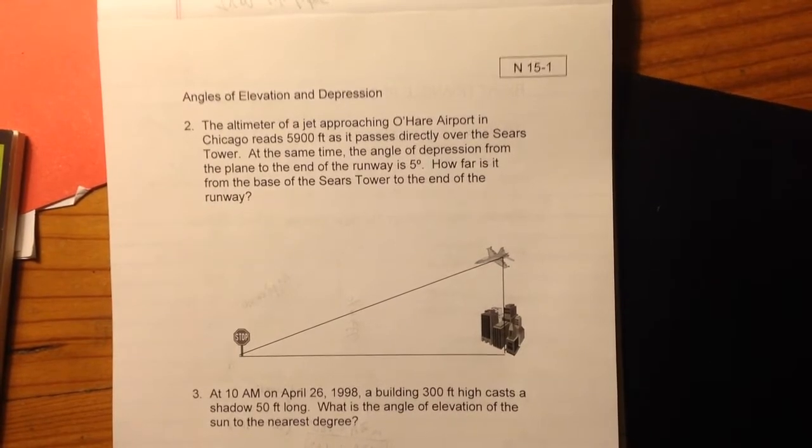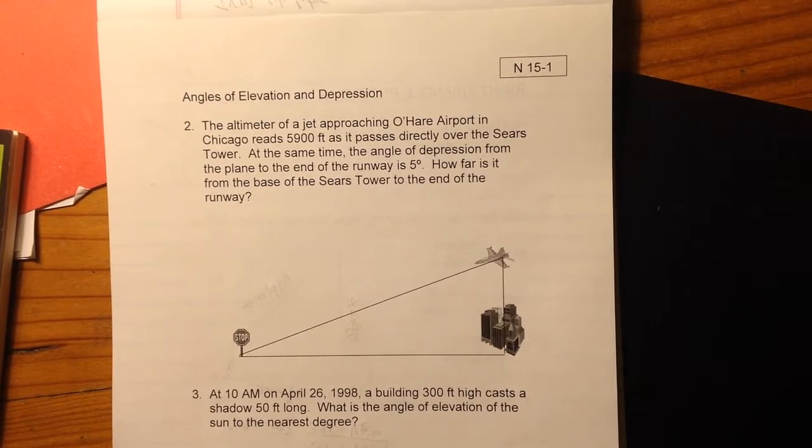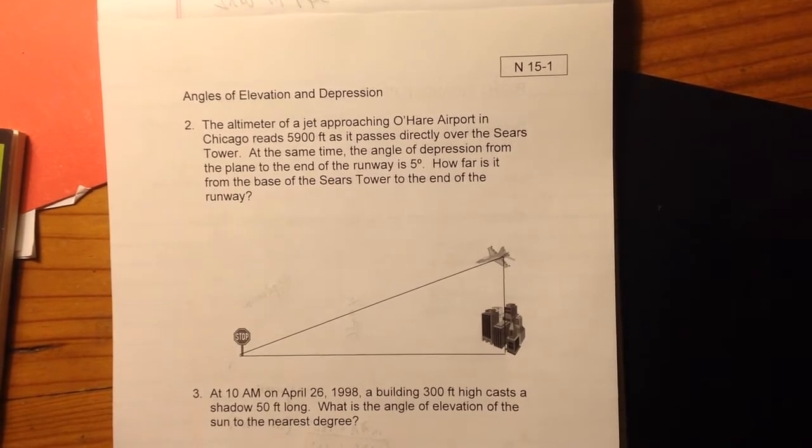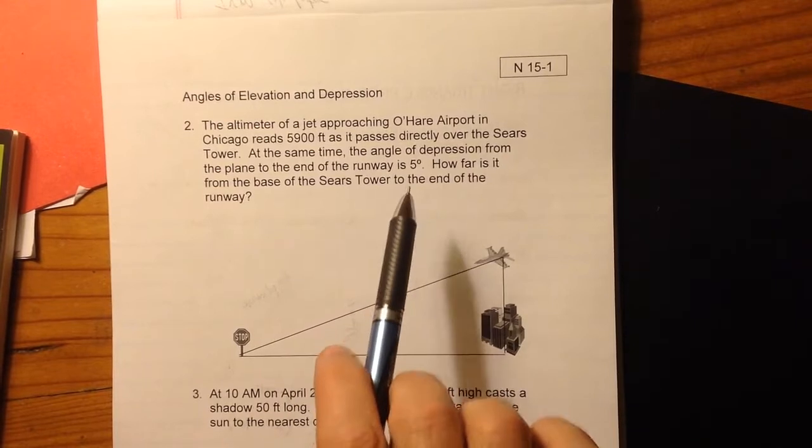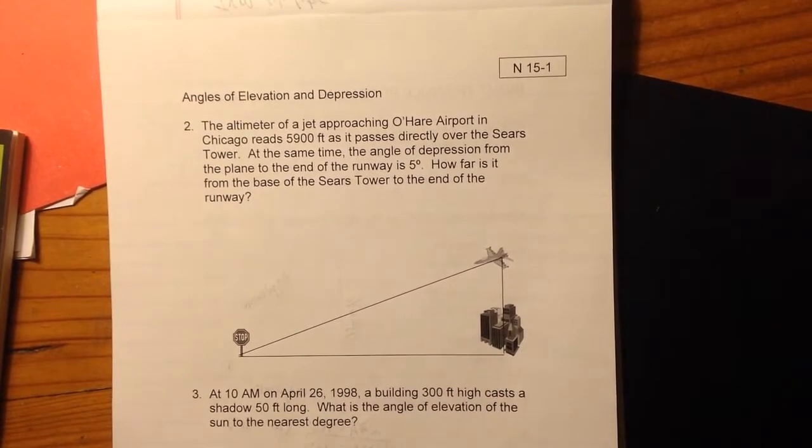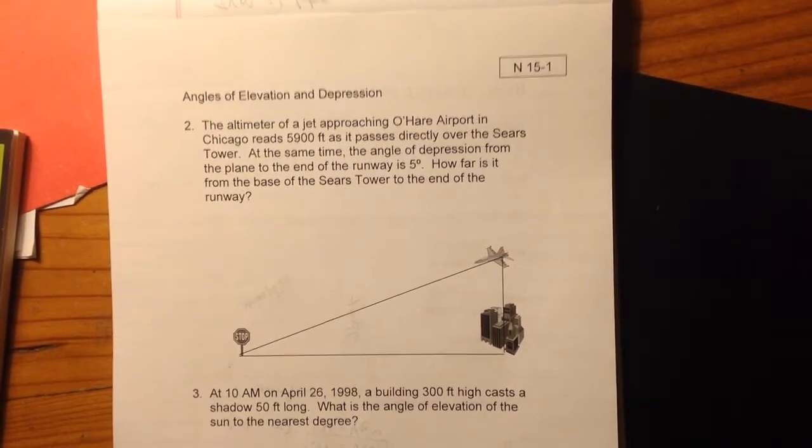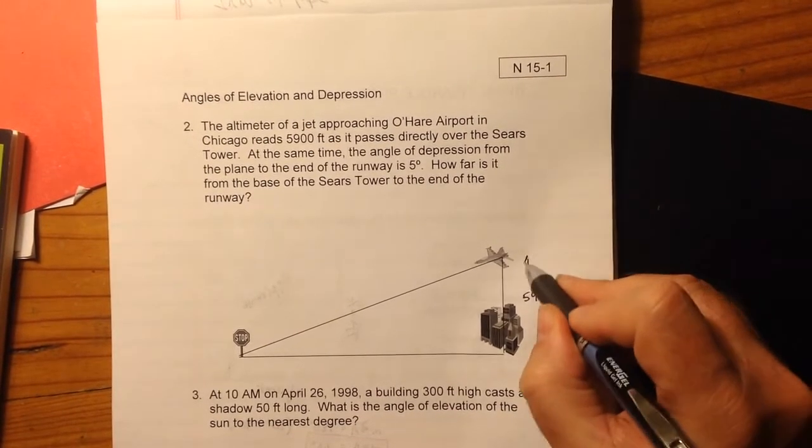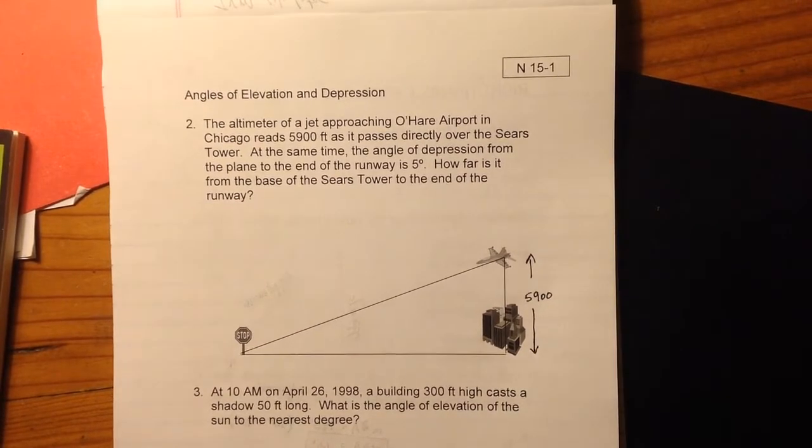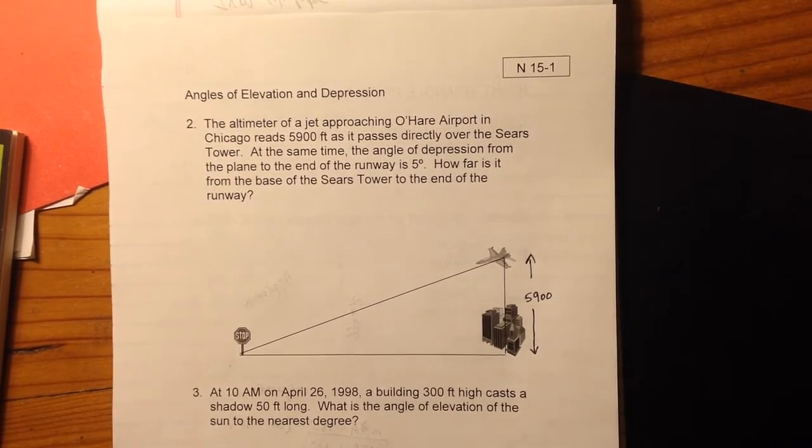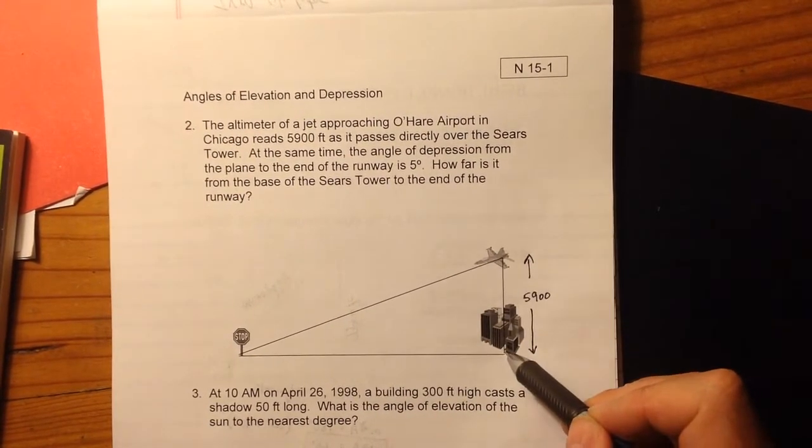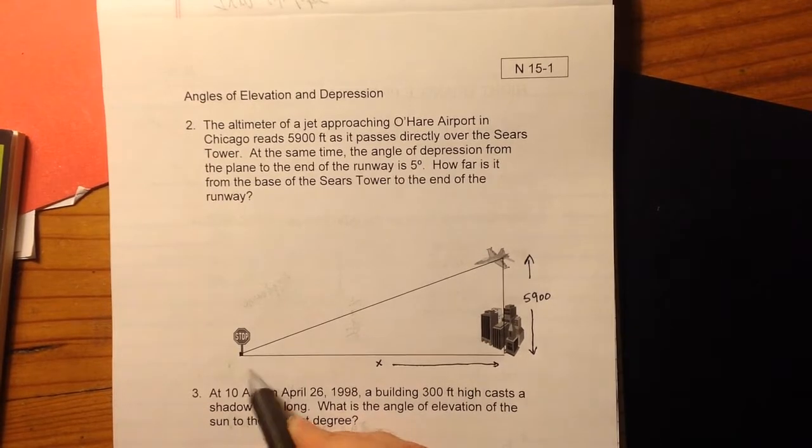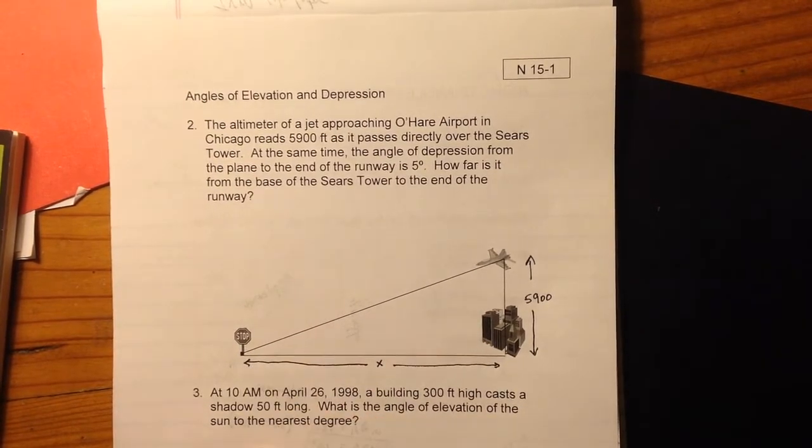So now we have a couple real-world sort of problems here. Number two, the altimeter of a jet approaching O'Hare Airport in Chicago reads 5,900 feet as it passes directly over the Sears Tower. At the same time, the angle of depression from the plane to the end of the runway is 5 degrees. How far is it from the base of the Sears Tower to the end of the runway? So we've got a picture here already. Let's label the things that we know. We know that this plane is 5,900 feet above the ground when it passes over the Sears Tower. We're looking for how far is it from the base of the Sears Tower down here to the end of the runway. And so this is our X that we're solving for all across here, the base of the triangle.